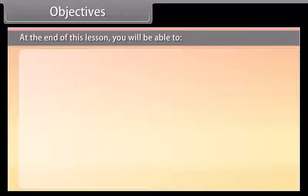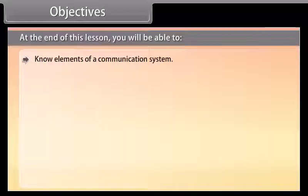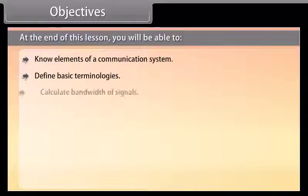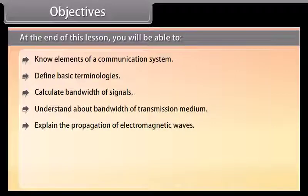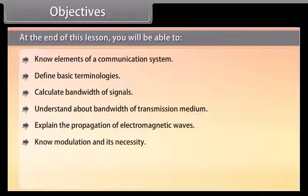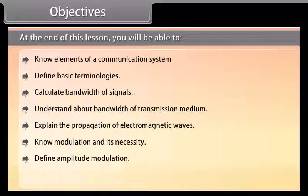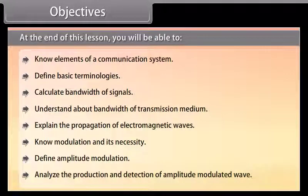Objectives. At the end of this lesson, you will be able to: know elements of a communication system, define basic terminologies, calculate bandwidths of signals, understand bandwidth of transmission medium, explain the propagation of electromagnetic waves, know modulation and its necessity, define amplitude modulation, and analyze the production and detection of amplitude modulated wave.